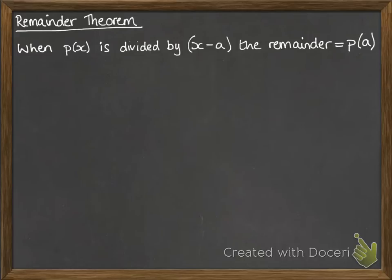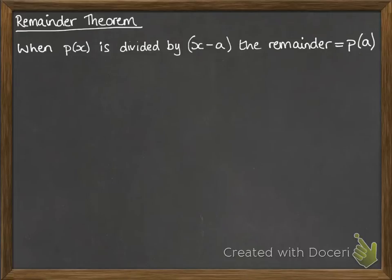But sometimes things don't divide exactly. Sometimes you want to know what the remainder is. This can be extended a little. So if we have the polynomial divided by sx minus t as our bracket there, then the remainder will be the value of that polynomial if you substitute in t divided by s. Very similar to when you're factorizing quadratics.